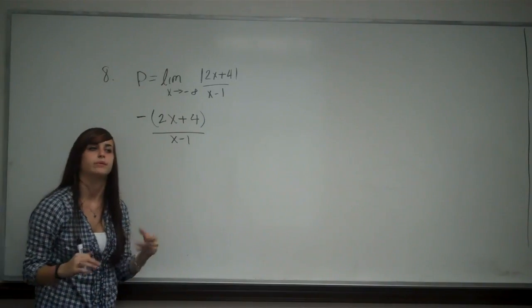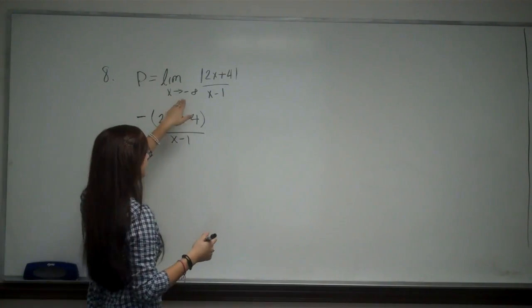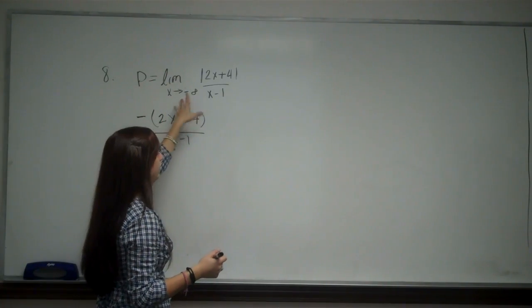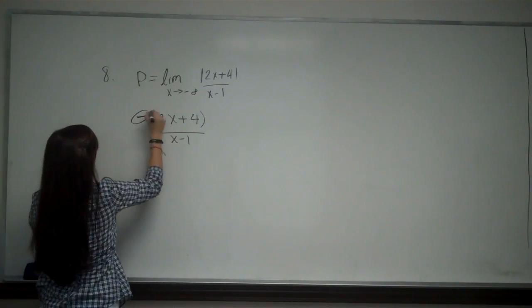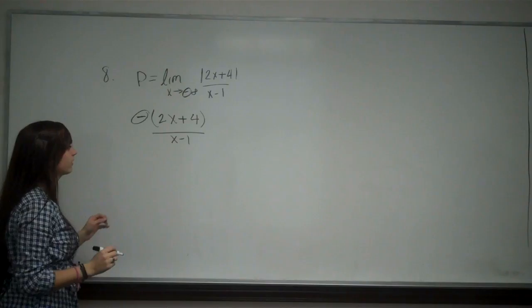Because remember, absolute values can either be negative or positive. So if this was approaching positive infinity, I would not have my negative here. But because it's negative infinity, I have my negative.